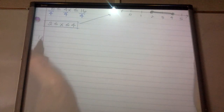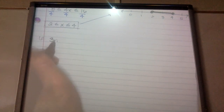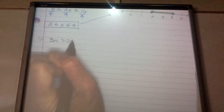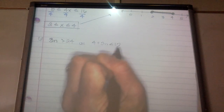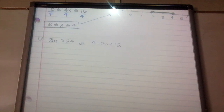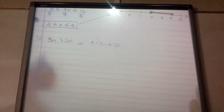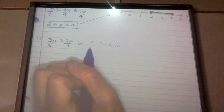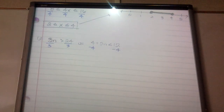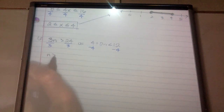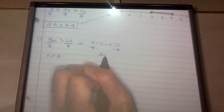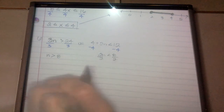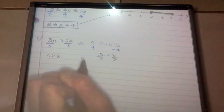Another compound inequality. For this problem it says: 3n is greater than 24, or 4 plus 2n is less than 12. This is a compound inequality because I have more than one inequality. Let's solve both. On the left I divide by 3, so n is greater than 8. On the right I subtract 4, leaving 2n less than 8, then divide by 2: n is less than 4.